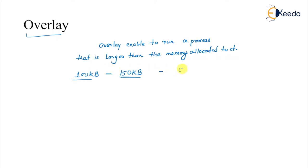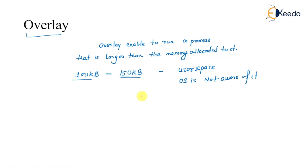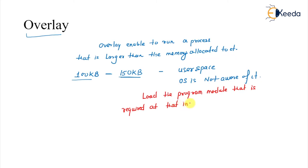Overlay is implemented by the user. It is implemented in user space and the operating system may not be involved in this — the operating system is not aware of it. The idea here is that we load only the program module that is required at that instance of time.